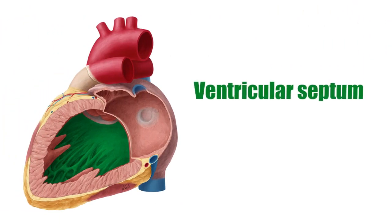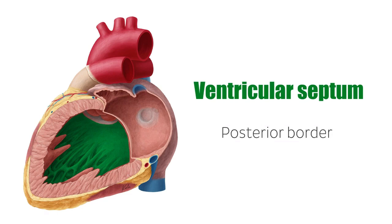The ventricular septum borders the right ventricle posteriorly and bulges somewhat into it, creating a transverse semi-lunar cross section.